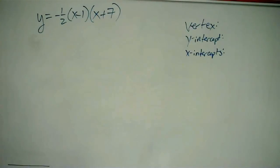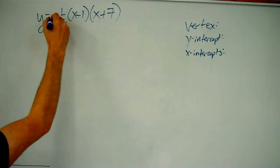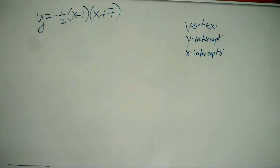Okay, so in this video, we have a quadratic function here that's written in factored form. It's the function y equals negative one-half times x minus one times x plus seven.